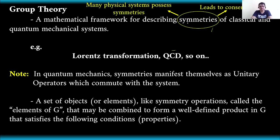Symmetries make the mathematics more straightforward and the solutions very direct. In quantum mechanics, symmetries manifest themselves as unitary operators which commute with the system. We are familiar with unitary operators and, in matrix form, unitary matrices.